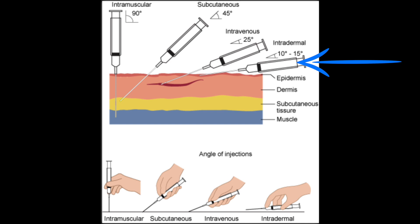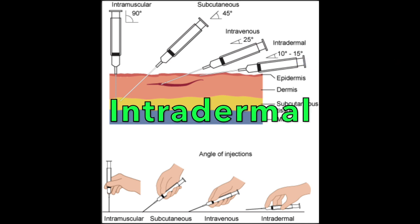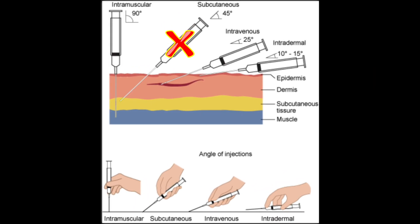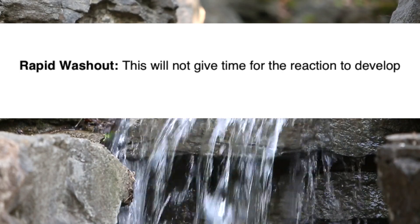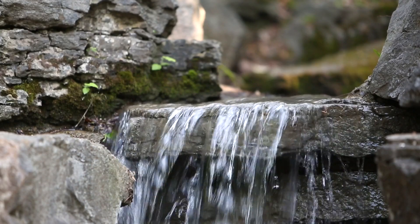Tip number four: where it goes. 0.1 milliliter of the PPD purified protein derivative is injected into the intradermal space of the inner forearm. This is why it's extremely important for the needle to be at a certain angle. The needle angle should be at 5 to 15 degrees to help ensure it gets into the intradermal space. If the PPD is given in the subcutaneous space, which is deeper, it will result in a rapid washout from the administration site and will not give time for a reaction to develop. Too superficial of an injection could potentially cause it to leak out onto the skin.